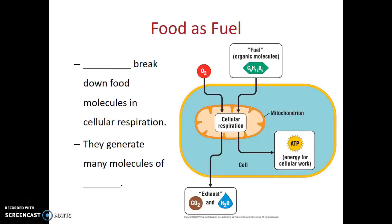Let's talk about food first as fuel. Cells break down food molecules during cellular respiration. In this process, they generate many molecules of ATP. This event happens within the mitochondria of eukaryotic cells. It requires oxygen and food molecules as the reactants, and the products will be carbon dioxide and water.